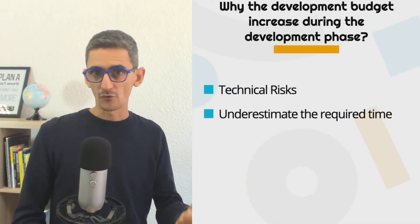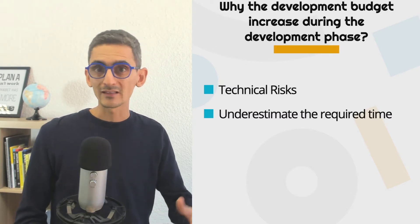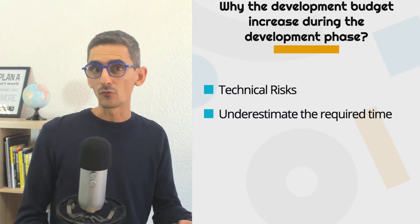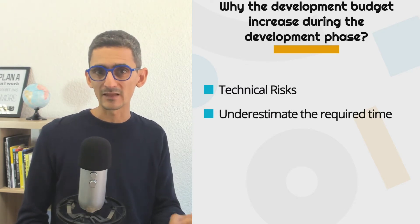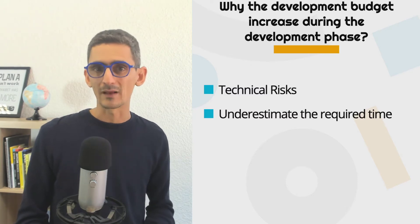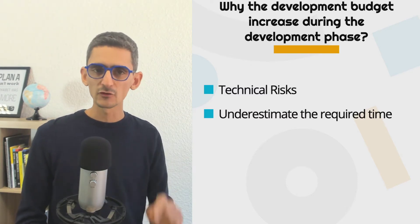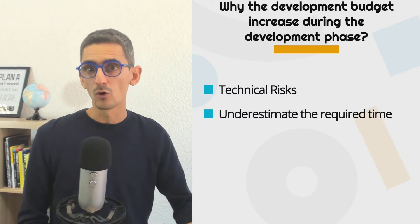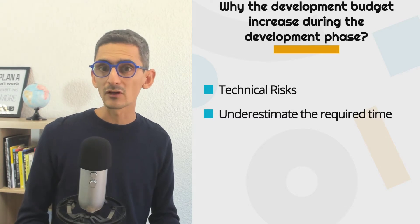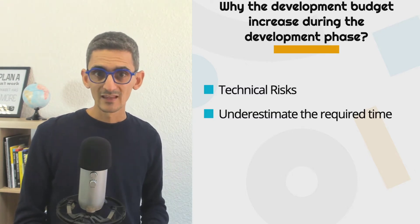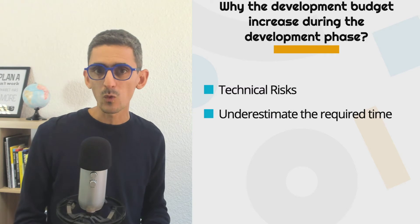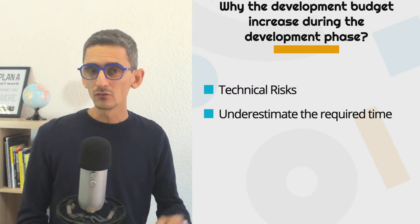The tension between the provider and the startup founders often goes up at that time. It's due, first, to the provider who often underestimates. They can underestimate the technical risks, and it often happens when we delegate things to junior developers or to developers who never built a specific type of application. That's why it's important to get someone who already did it in the past with similar technologies. Developers in general, and even more so juniors, often tend to underestimate the required time, especially if they do not split developments into small chunks. These are the two main reasons why the development budget might increase along the way due to the providers.